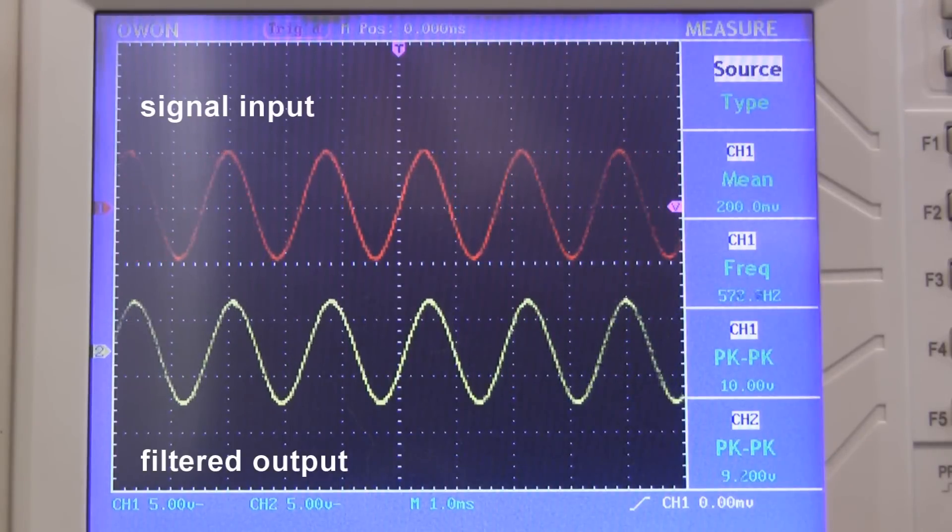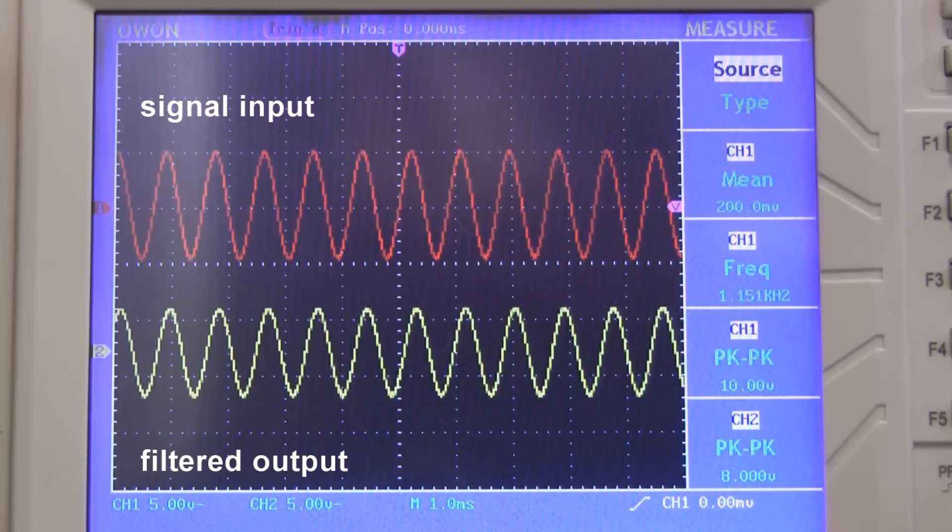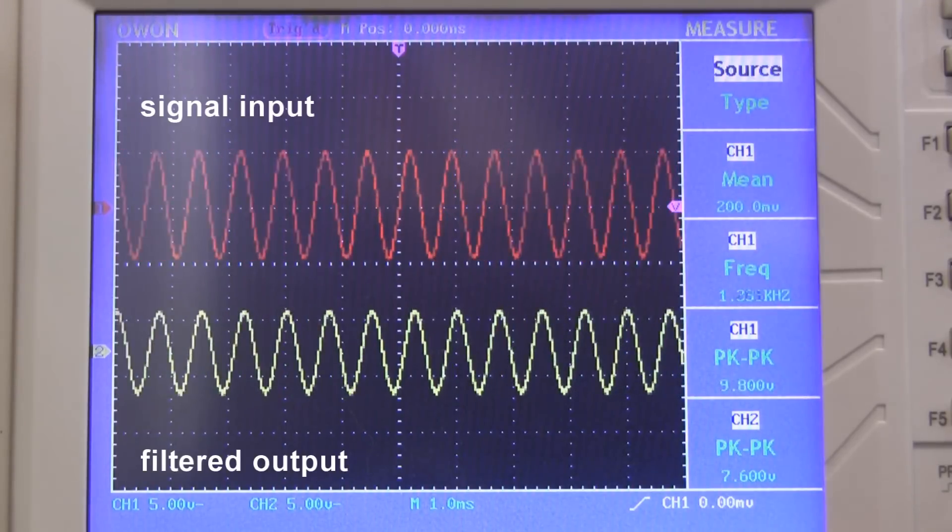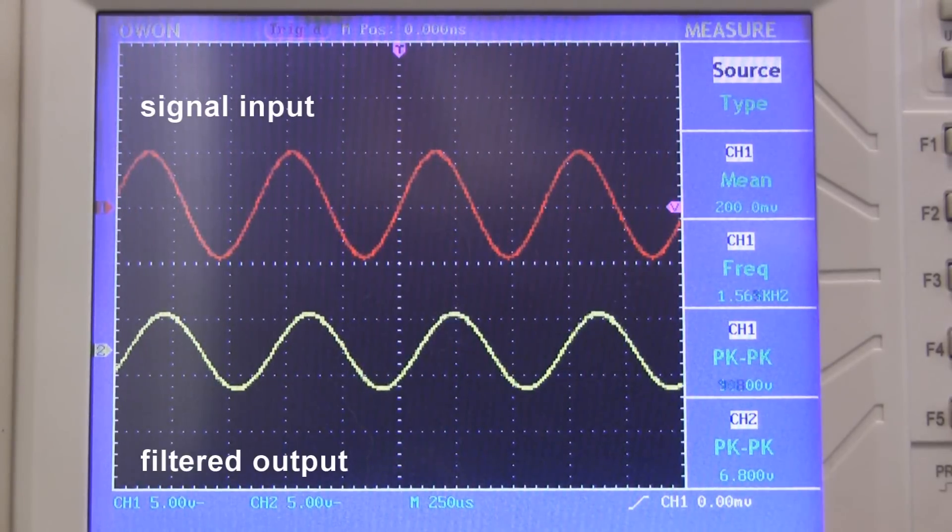Now at frequencies approaching 1600 Hz, the amplitude is slowly dropping on the output. By the time we reach the 1600 Hz cutoff frequency, we've got a reduction of about 30%. The cutoff frequency is the point where the filtering effect really starts kicking in.